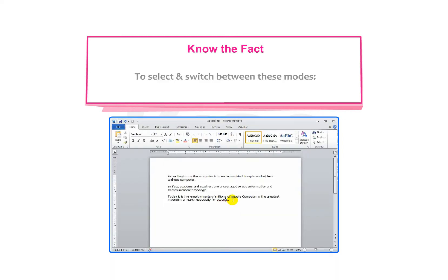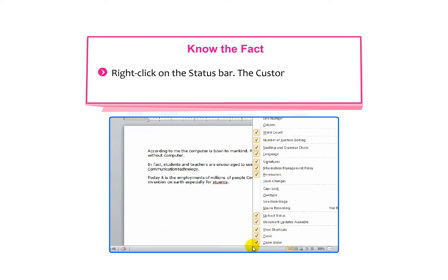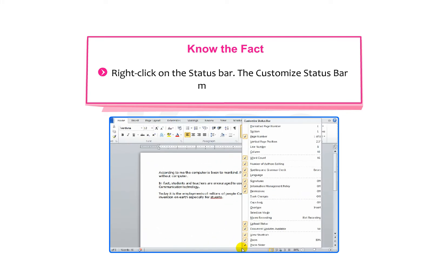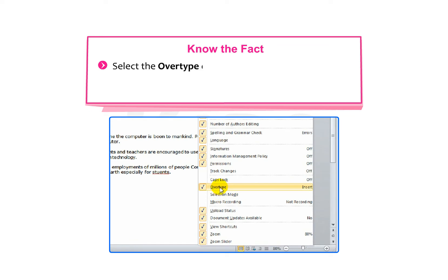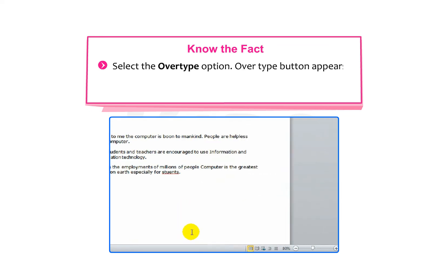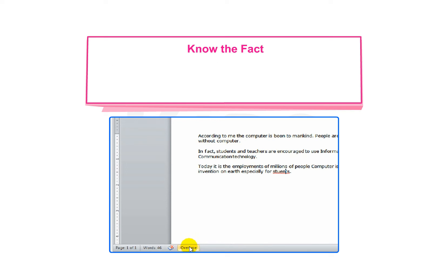To select and switch between these modes, right click on the status bar. The Customize Status Bar menu appears. Select the Overtype option. The Overtype button appears on the status bar, indicating that Overtype mode is on. To switch back to Insert mode, click on the Overtype button.